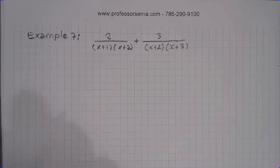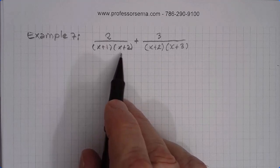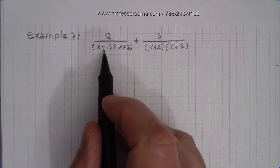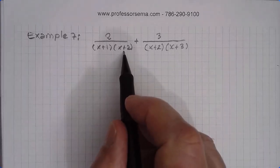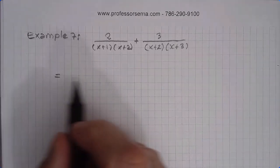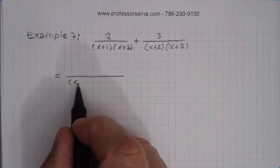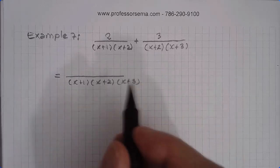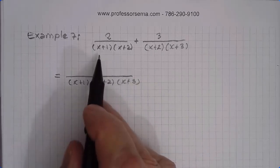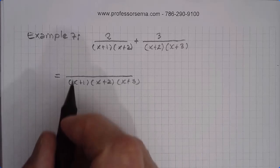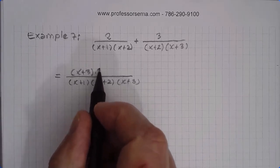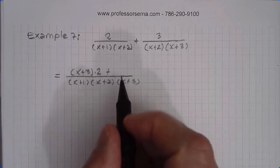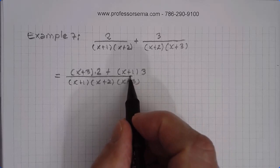Another example: we have two fractions where the denominators are polynomials that have already been factored — these two factors and these two factors. We don't need to take the product of both entirely, because x plus 2 appears in both. So our common denominator is x plus 1 times x plus 2 times x plus 3 — we don't take x plus 2 twice. Dividing by the first denominator leaves x plus 3, multiplied by 2; dividing by the second leaves x plus 1, multiplied by 3.